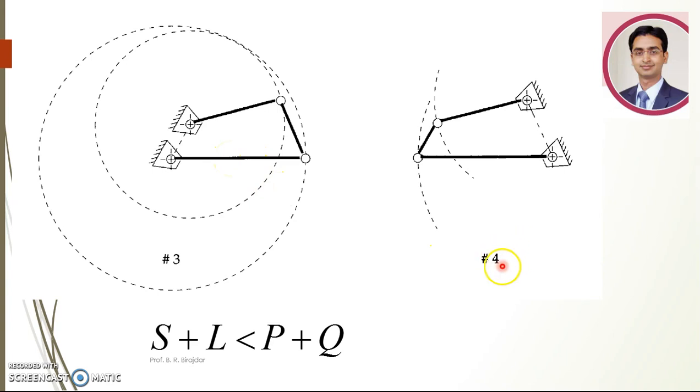Now again in the fourth case, the follower is fixed and here the crank will get the rotary motion. This will oscillate, this will also oscillate. While oscillating these two, it will rotate about its own center. So if it satisfies S plus L less than P plus Q, it means at least one of the links in this mechanism will get the rotary motion.